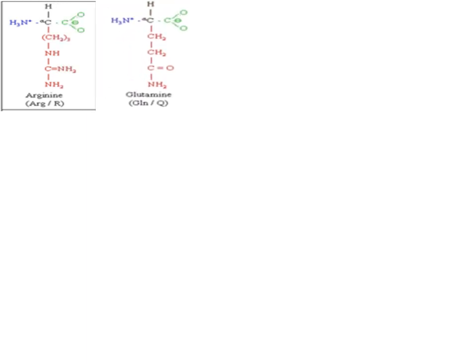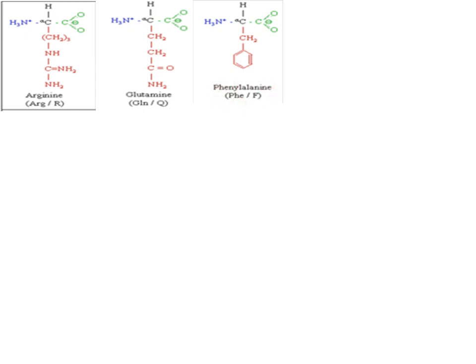The first amino acid shown here is arginine, represented by the abbreviation ARG or the capital letter R. The next amino acid is glutamine — it also has an amino group, a carboxylic group, and a hydrogen atom attached to the alpha carbon atom, with only the alkyl group varying. This amino acid is called glutamine, abbreviated GLN. Another amino acid is phenylalanine, where the alkyl group is an aromatic compound, abbreviated PHE or the capital letter F.